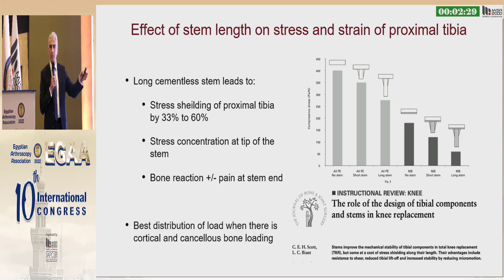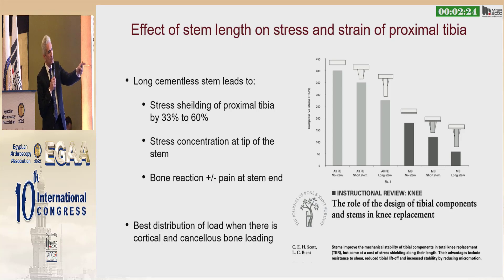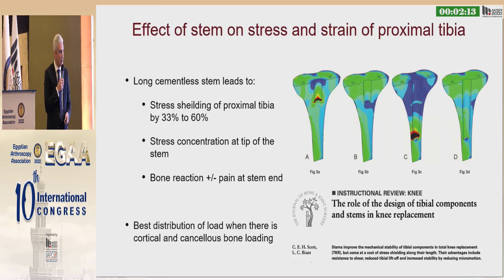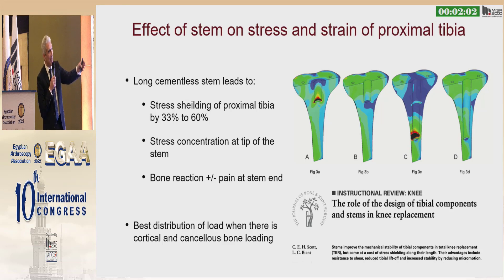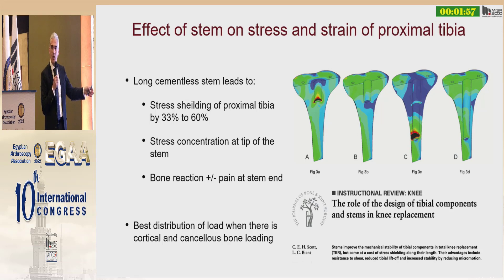This is a study that looked at the relation between the length of the stem and the degree of offloading of the proximal tibia. The longer the stem, the more offloading on the proximal tibia and the more stress shielding. The blue areas show stress shielding where the bone is not loaded, while the black and red areas show high stresses, which may result in periosteal reaction and diaphyseal pain in many patients.